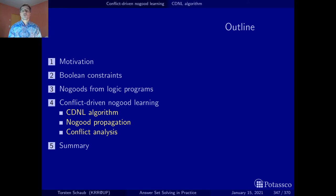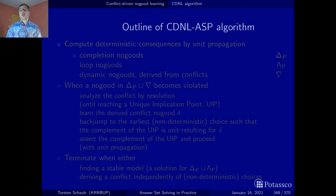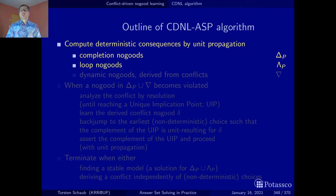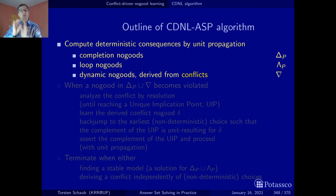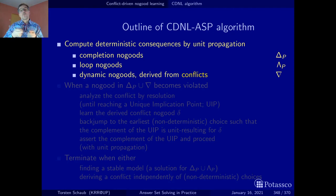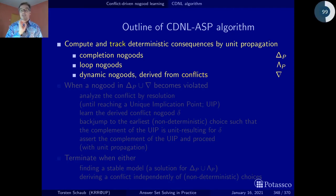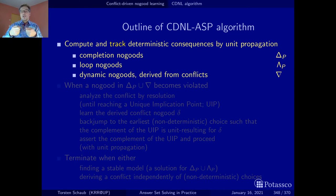Let's get started with the actual search procedure. The overall approach rests upon unit propagation on no-goods. But these are not only completion and loop no-goods, but also conflict no-goods recorded by the algorithm on the fly. The other characteristic thing is that it does not only use unit propagation to compute the deterministic consequences, but also each unit resulting literal is associated with the no-good from which it is derived. The algorithm also keeps track of the relation between the unit resulting literal and the no-good from which it was derived.